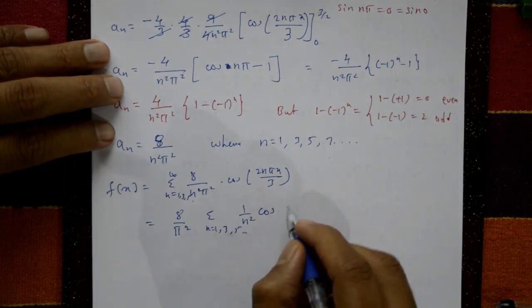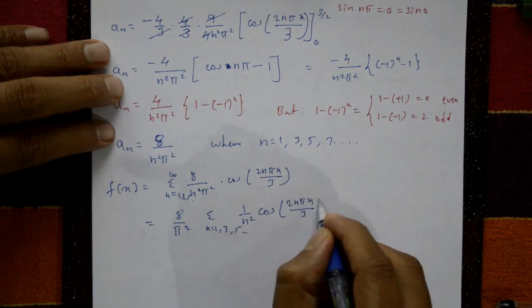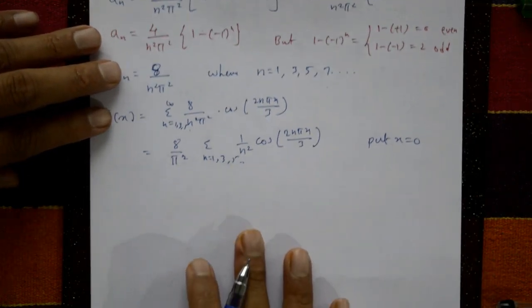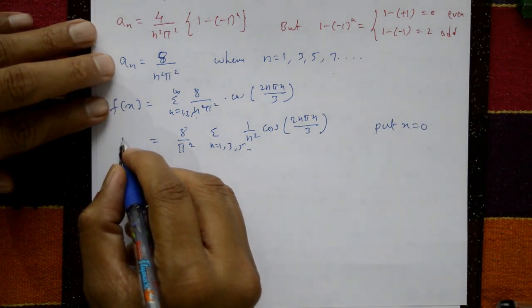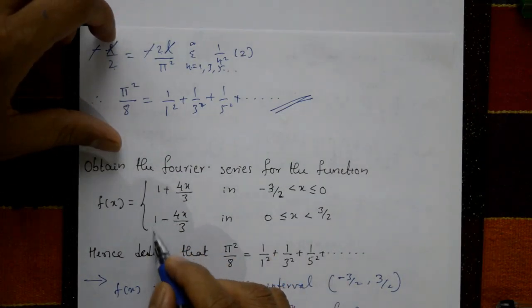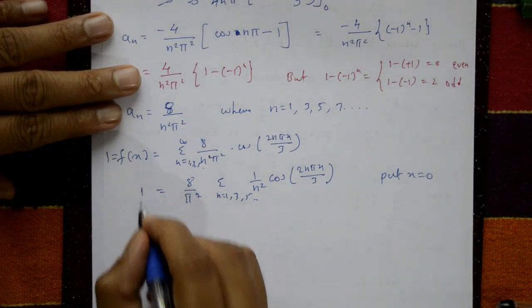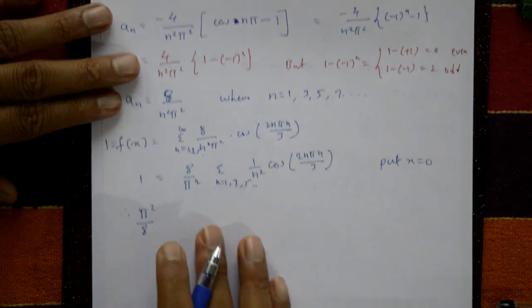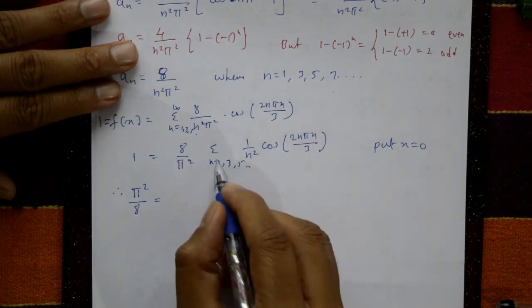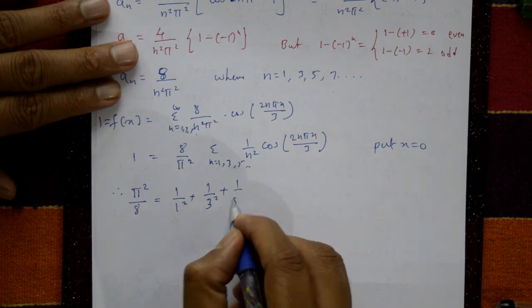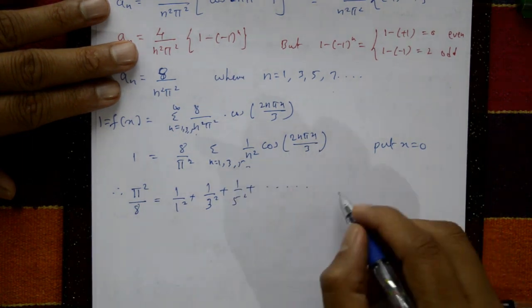To deduce the result, put x = 0: cos(0) = 1 and f(0) = 1. So 1 = (8/π²)(1/1² + 1/3² + 1/5² + ...). Cross-multiplying gives π²/8 = 1/1² + 1/3² + 1/5² + so on. This is the required series.